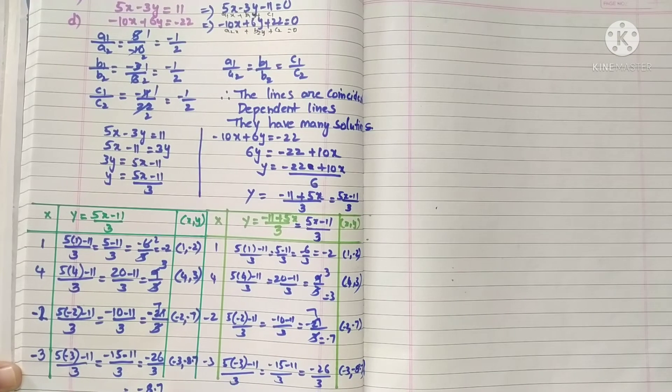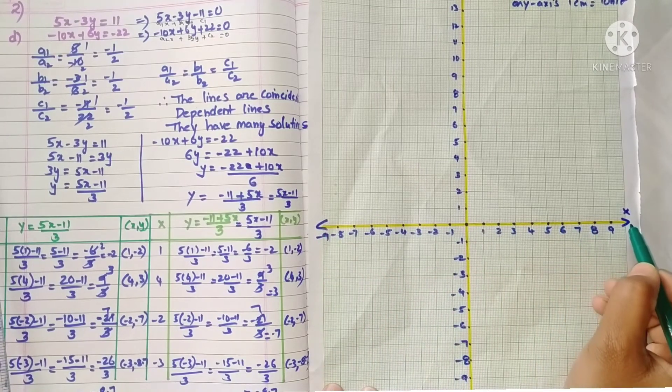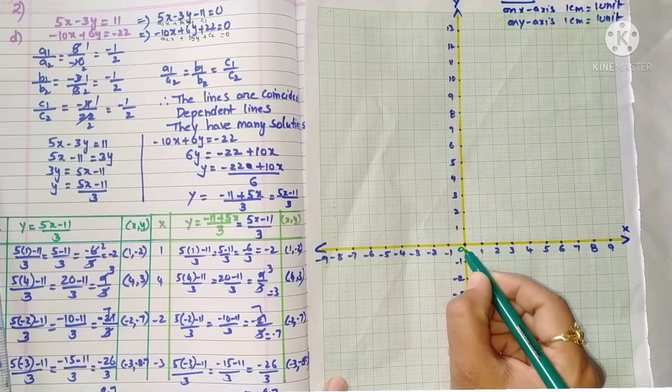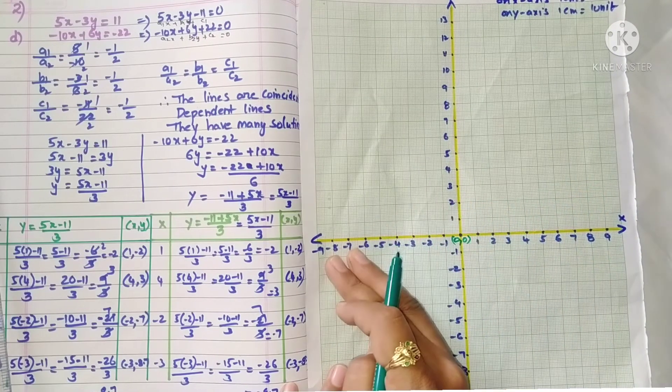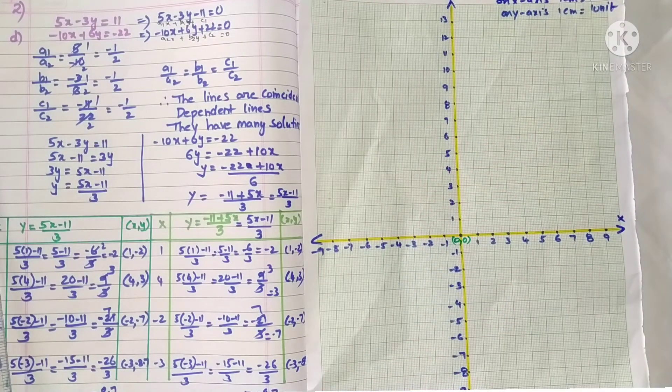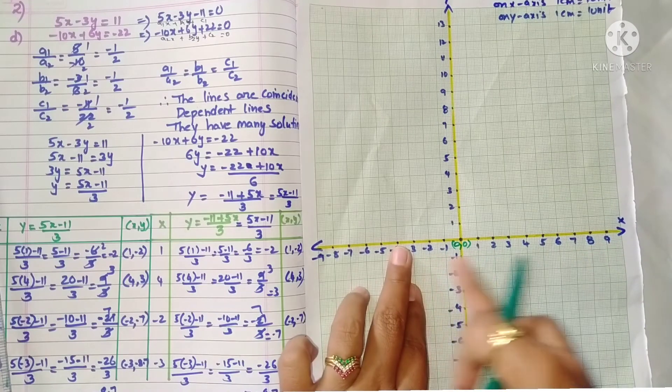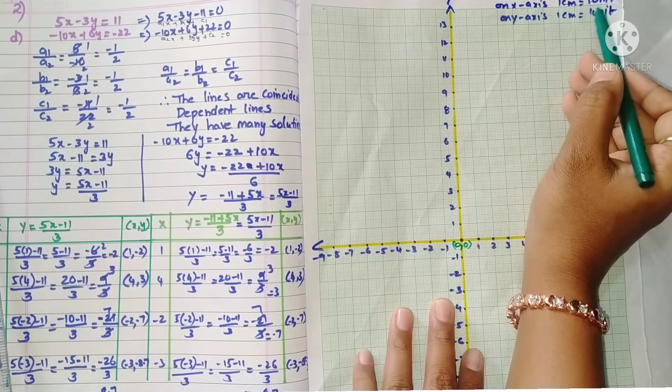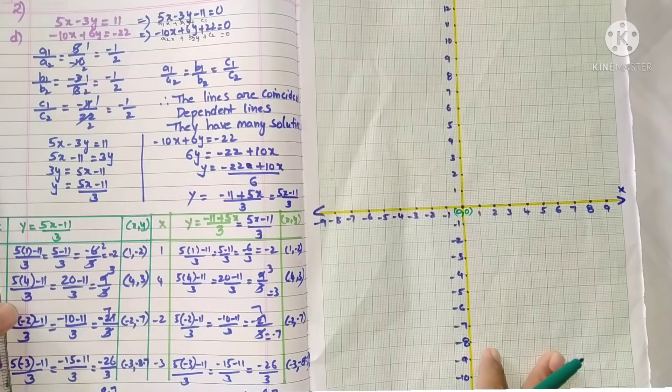Now we will represent all these points on the graph. Take the graph paper. Name the horizontal line as x-axis and the vertical line as y-axis, and the intersection as origin (0, 0). Right side positive values, left side negative, above the origin positive, below the origin negative. On the x-axis: 1, 2, 3, 4, 5, 6. Scale on x-axis: 1 cm equals 1 unit. Similarly on y-axis, 1 cm equals 1 unit.